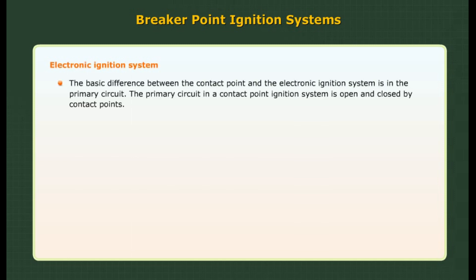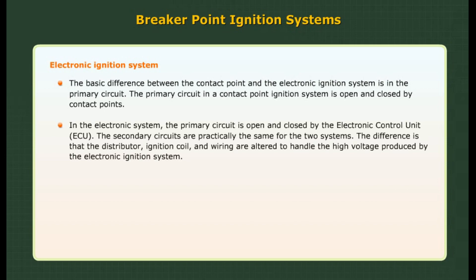The basic difference between the contact point and electronic ignition system is in the primary circuit. In a contact point ignition system, the primary circuit is opened and closed by contact points. In the electronic system, the primary circuit is opened and closed by the Electronic Control Unit (ECU). The secondary circuits are practically the same for both systems, except that the distributor, ignition coil, and wiring are altered to handle the higher voltage produced by the electronic ignition system.